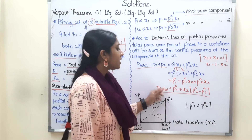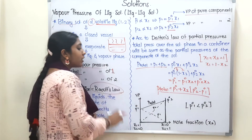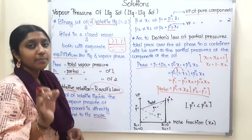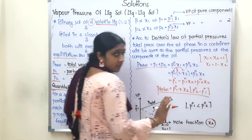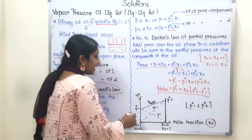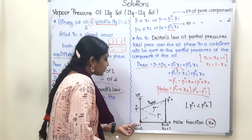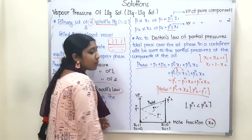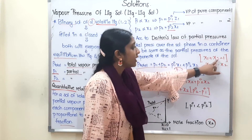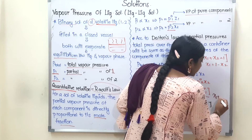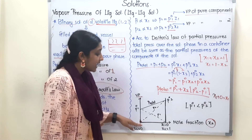Now we will look at the graph of total vapor pressure. On the x-axis, we have the mole fraction X2. On the y-axis, we have vapor pressure. At the starting point, the value of X2 is 0, which means X1 = 1 — the solution is pure component 1. At this point, P total equals P01, since anything multiplied by 0 vanishes and X1 = 1 gives us purely P01.